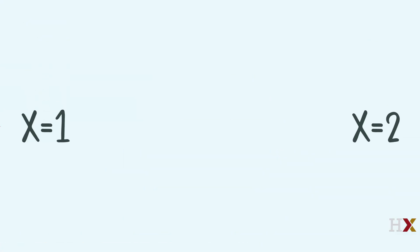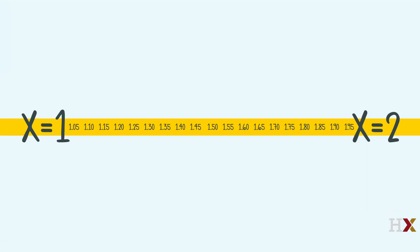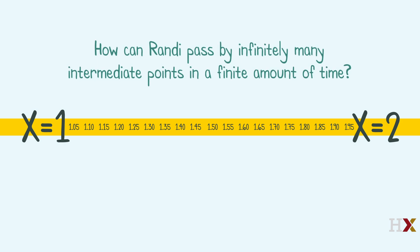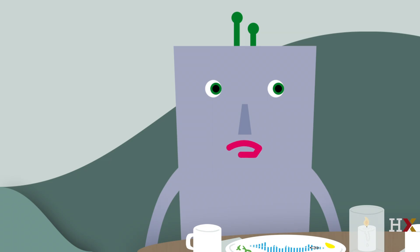Good point. To swim from x equals 1 to x equals 2, Randi must cross through every real number from 1 to 2. Ancient Statland philosophers were puzzled about how that could be possible. How can Randi pass by infinitely many intermediate points in a finite amount of time? Anyway, if we observe Randi over a long time interval, it is very likely that Randi will visit x equals 1.5 at least once. But here we are checking on Randi at one time point. So, the probability is 0 that Randi is exactly at 1.5 at that one time point.